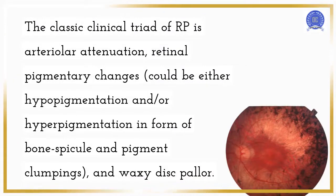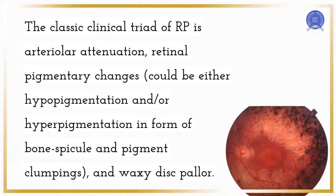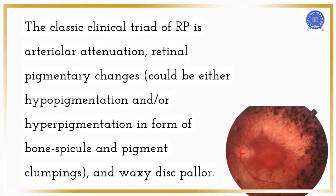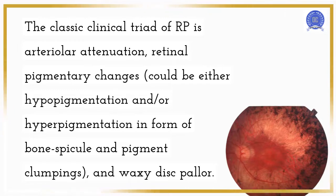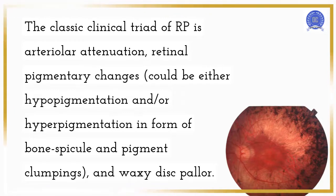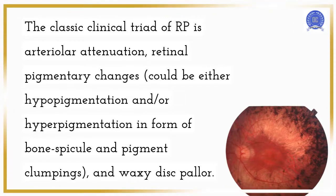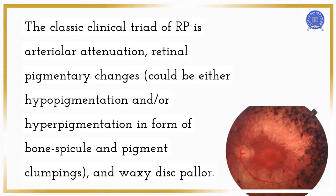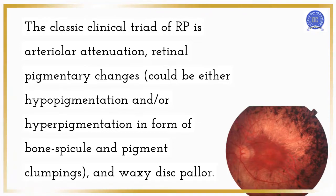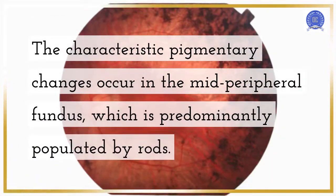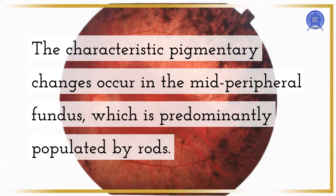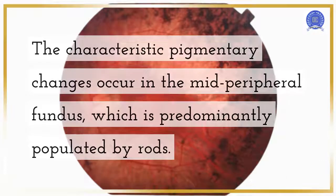The classic clinical triad of RP is arteriolar attenuation, retinal pigmentary changes — which could be either hypopigmentation and/or hyperpigmentation in the form of bone spicule pigment clumpings — and waxy disc pallor. The characteristic pigmentary changes occur in the mid-peripheral fundus, which is predominantly populated by rods.